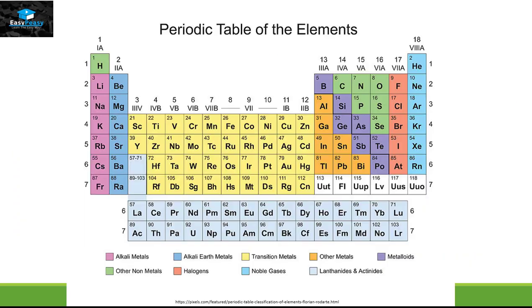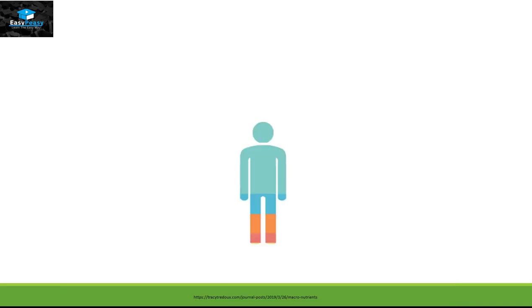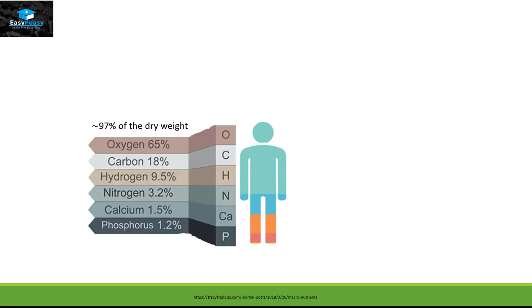So far, scientists have discovered around 118 elements and more need to be found. But we are more curious what type of elements are present inside a human being. And to our curiosity, 97% of our dry weight consists of 6 different elements only.